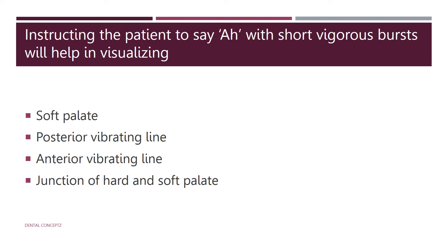Next: instructing the patient to say 'A' with a short vigorous burst will help in visualizing what? This is a method to record the anterior vibrating line. Another method by which we can record the anterior vibrating line is by performing the Valsalva maneuver.